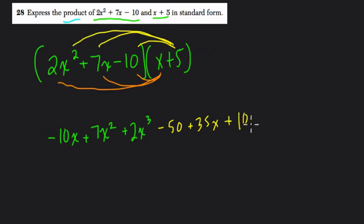So now I want to rearrange these terms to represent this in standard form. Standard form means you represent your exponents in decreasing order. Let's take the largest exponent first: 2x cubed. It's all by itself, nothing else being cubed, so that goes first.